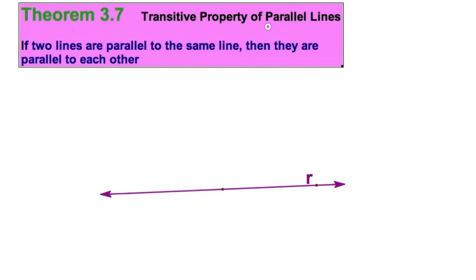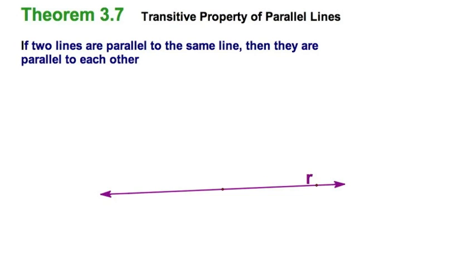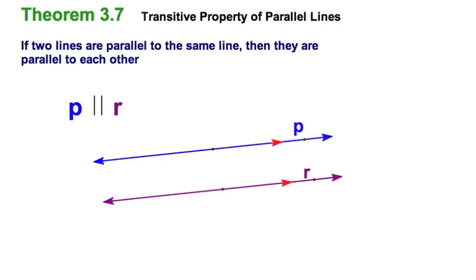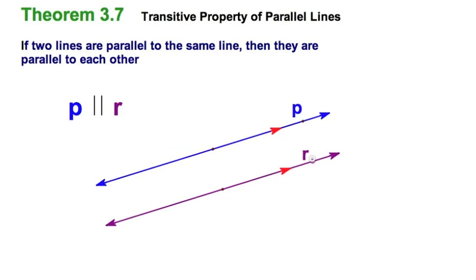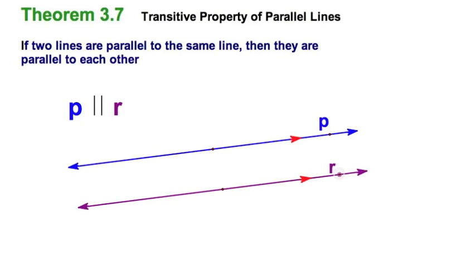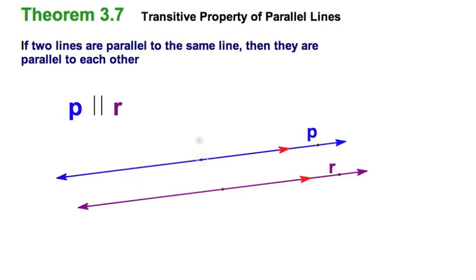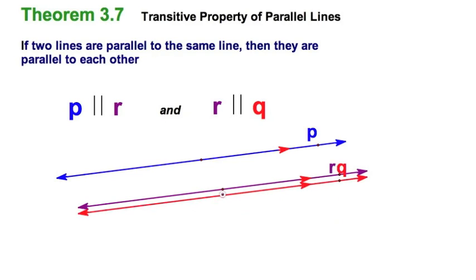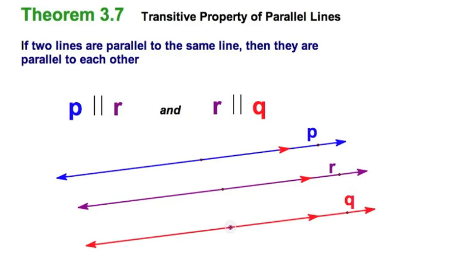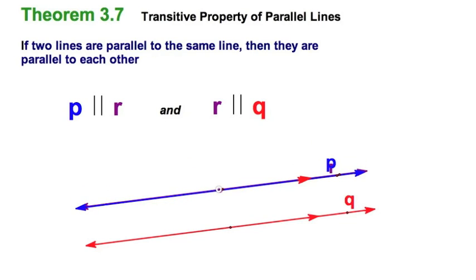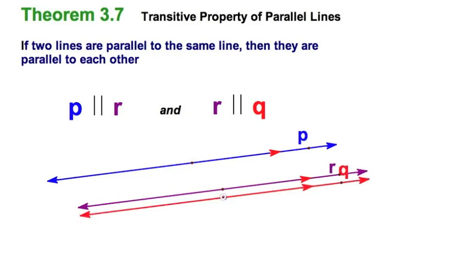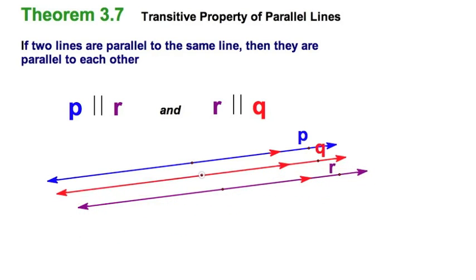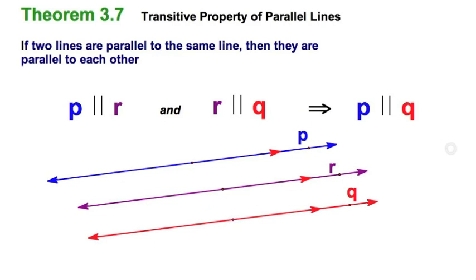Here's an interesting theorem called the transitive property of parallel lines. Starting with line r — the purple line — if p is parallel to r, and then I make a red line q that's also parallel to r, I've got p∥r and q∥r. Looking at this property: parallel, parallel. So the red line q must be parallel to the blue line p. That's the conclusion — pretty neat!